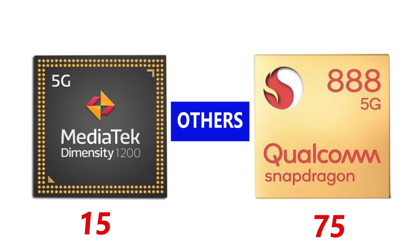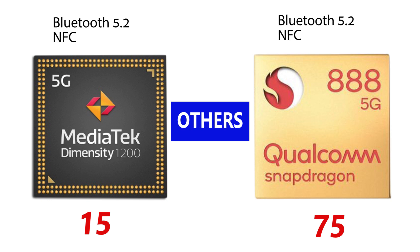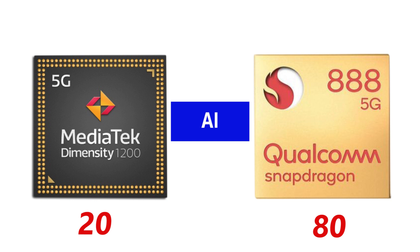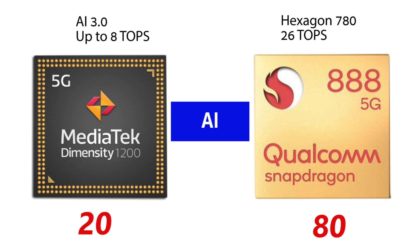Bluetooth 5.2 is available on both chips, and both also support NFC. When it comes to artificial intelligence and machine learning, the Snapdragon 888 leads again. The Hexagon 780 AI processor can perform 26 trillion operations per second, which is triple the number of operations the MediaTek Dimensity 1200 AI processor can perform.